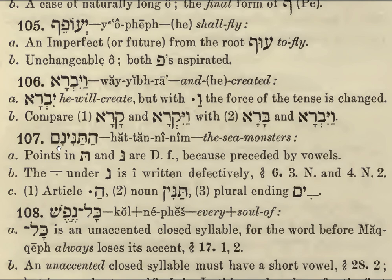Hat Tanninim. Notice here Hat Tanninim — so we have two sharp letters: Hat, Tanki. The points in the Tav and Nun are Dagesh Forte. Both instances have a vowel in front of them. The sound E under Nun is written defectively. The article Ha with the Dagesh, which you see here — Hat — and the noun is Tannin. The plural ending is IM, so Tanninim, and then Hat Tanninim.